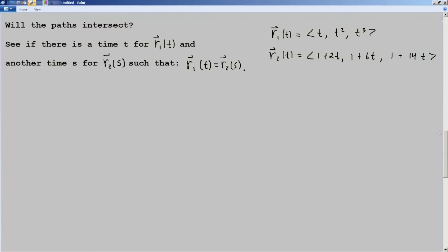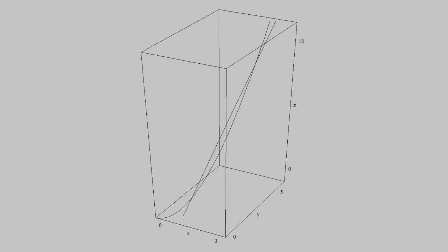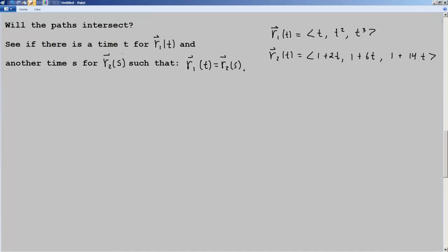Now the second question says, do the paths that the particles trace out, do those paths intersect? And this is a little bit more complicated. When we're looking at the paths, we're talking about the whole thing as if it left a tracer trail behind it. And it looked like they did. So we want to see if there's a time T for r₁ and another time S for r₂ such that r₁(T) equals r₂(S). So maybe like T is 1 half and S is 3, but for different times over each different path, they might collide. And we do the same thing as we did before. We'll start with this. For the second one, it's going to be a function of S. And so we'll set T equal to 1 plus 2S.